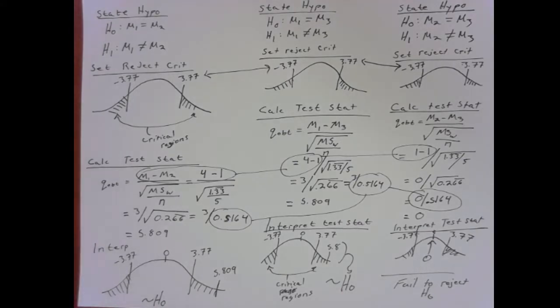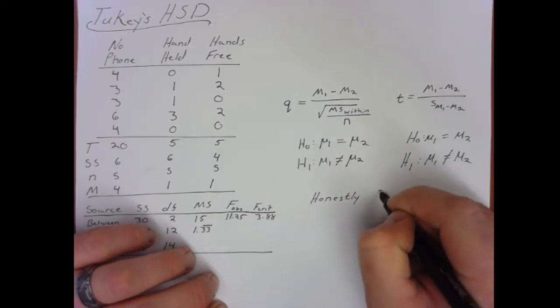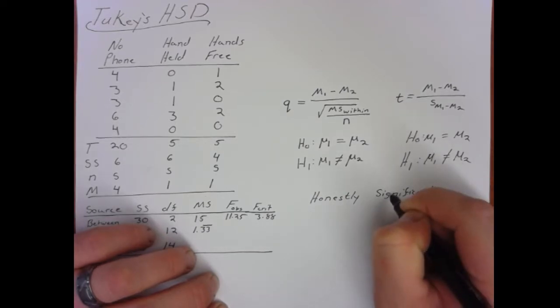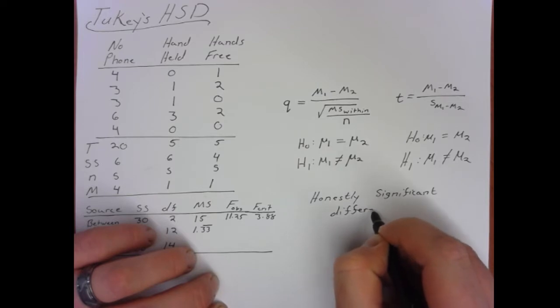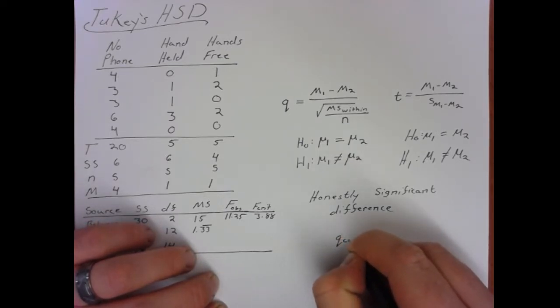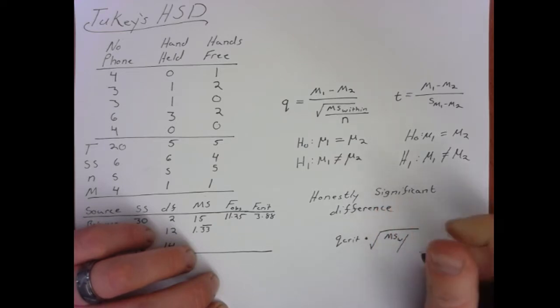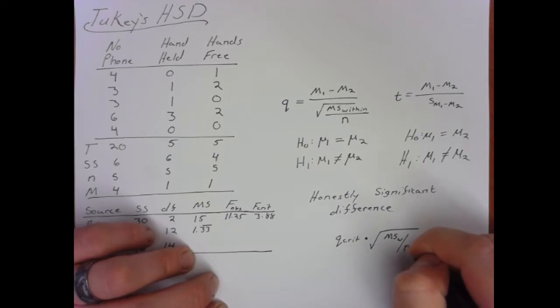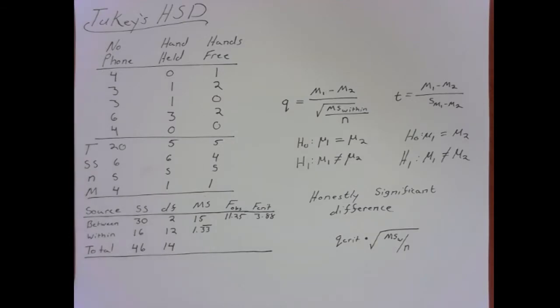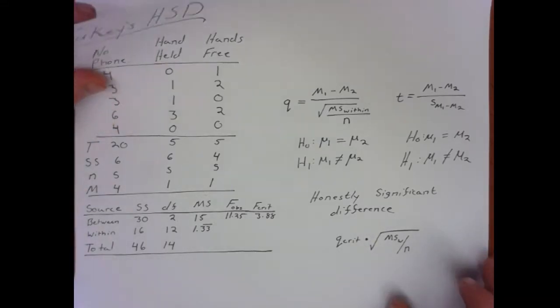There is a significant shortcut you can take. You can calculate what's called the Honestly Significant Difference (HSD). You algebraically rearrange things: take the critical value and multiply it by the error term from the t-test. So HSD equals Q critical times the square root of MS within divided by n. Then you compare this HSD value to each of the mean differences. The calculations are much, much quicker.